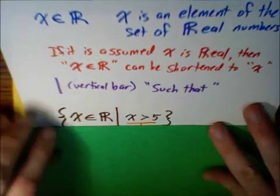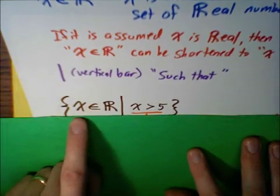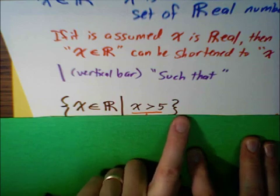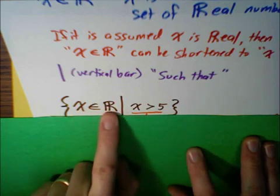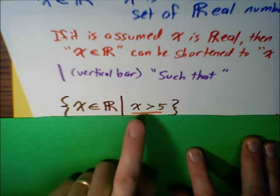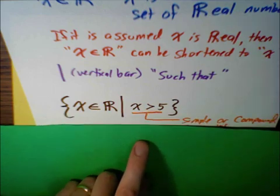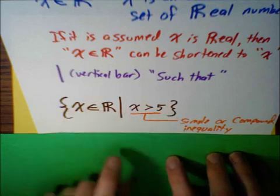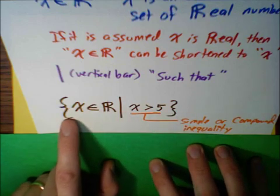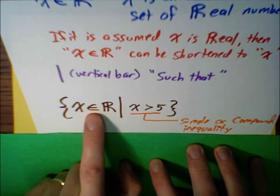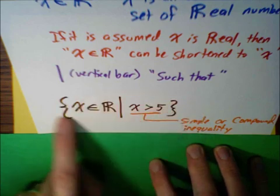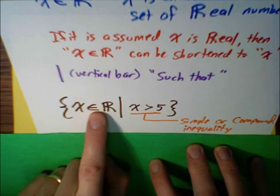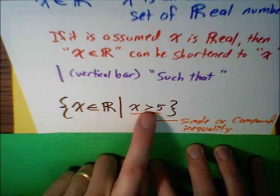So let's see if we can pronounce this problem. Again, we have a set, element of a real number system, which means x is real, such that. And then this is just a simple or compound inequality. So this is pronounced, x is a real number, or we want the set of all real numbers x, such that x is greater than 5.